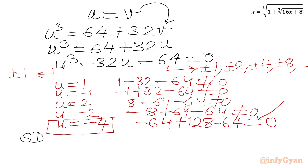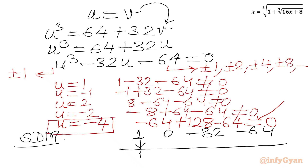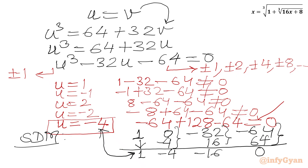Now we can use the synthetic division method. We write all the coefficients of the cubic equation: 1 (coefficient of u³), 0 (coefficient of u² is missing), minus 32 (coefficient of u), minus 64 (constant). Leading coefficient 1 stays as is. Multiply base solution minus 4 by 1: gives minus 4. Add: minus 4. Multiply minus 4 by minus 4: plus 16. Add: minus 16. Multiply minus 4 by minus 16: plus 64. Add: 0. So the coefficients for the resulting quadratic equation are 1, minus 4, minus 16. We write: u squared minus 4u minus 16 equal to 0. Our first real solution is the base solution u equal to minus 4.